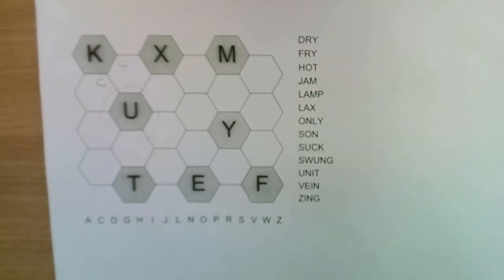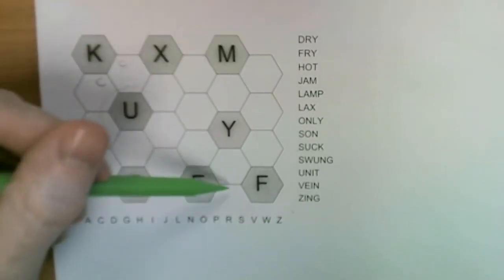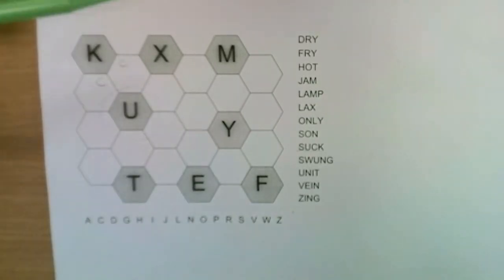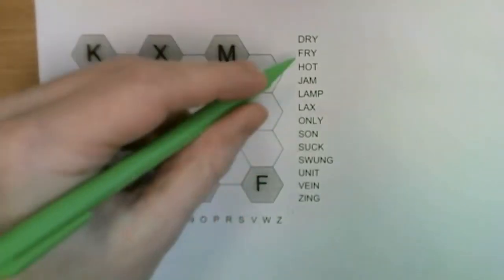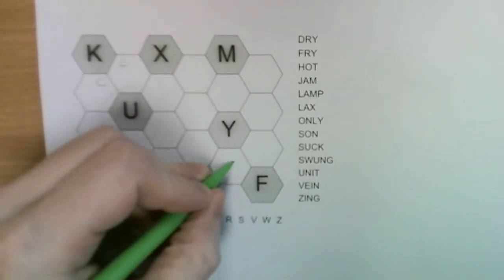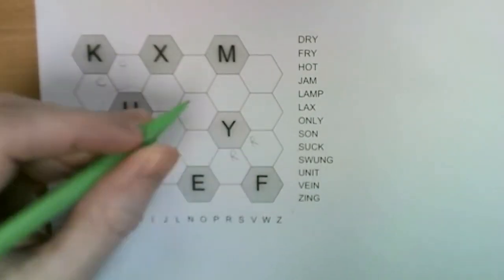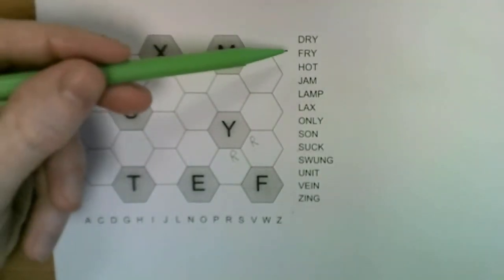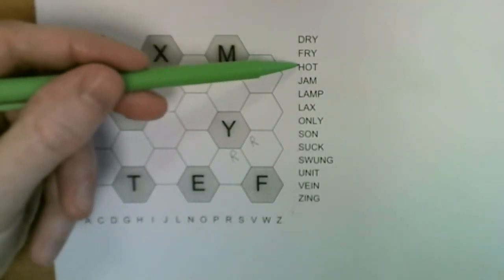Let's repeat that process over here with the F. So FRY, so F-R-Y, so one of these two squares contains the R.